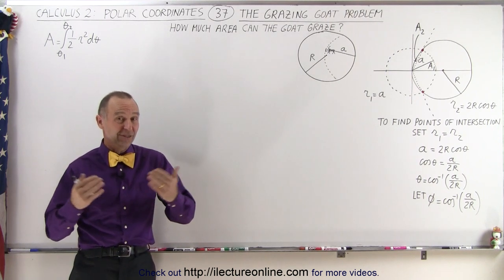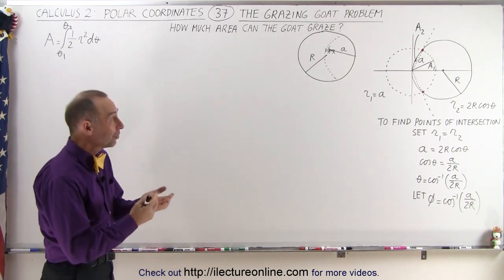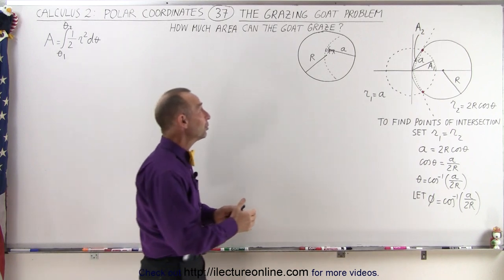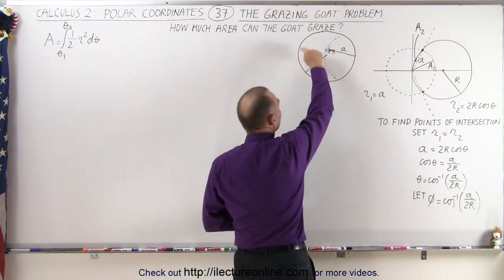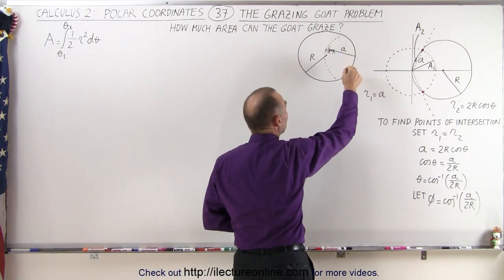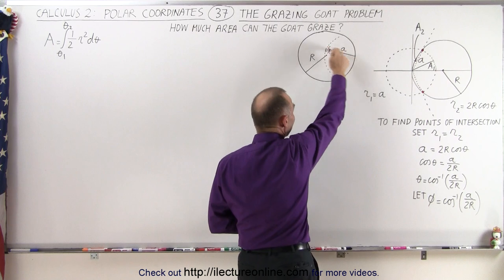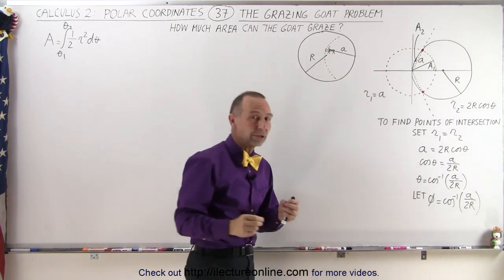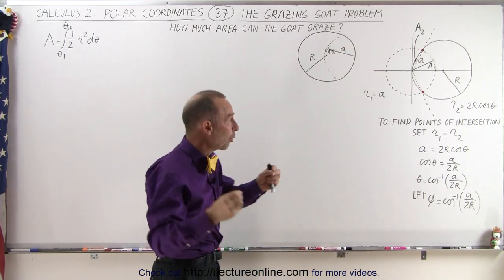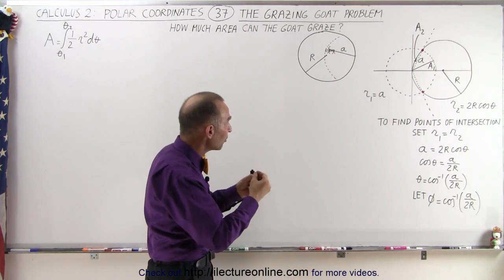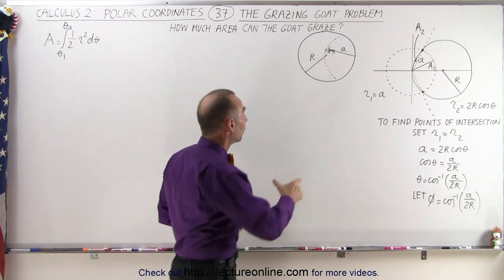You may ask: what is the grazing goat problem? Well, it turns out that we can have a circular enclosure. We put a goat in there that's tied up to the edge of that circular enclosure, where the string or rope by which the goat is tied has a certain length — in this case, length A.